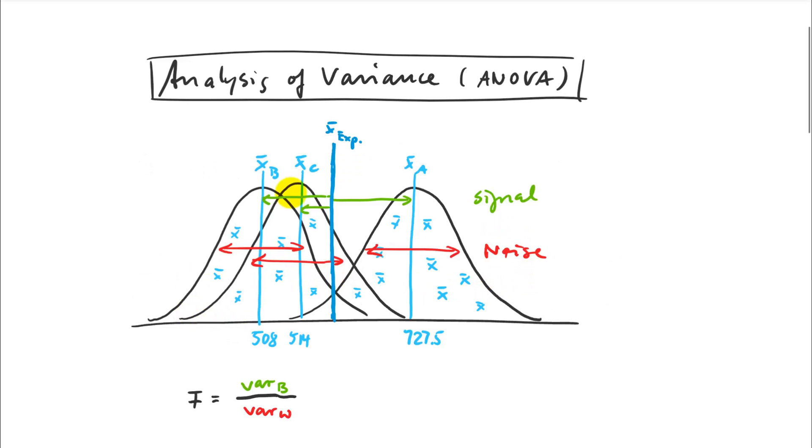It's the same general principle as we've drawn out for the t-test. We still have our sample means here of variety A, 727, variety B, 508, and then we may have a third variety here of 514. Previously we figured out how to describe the noise here as a standard error.